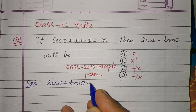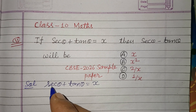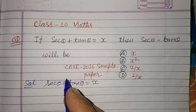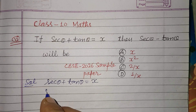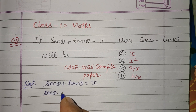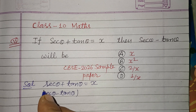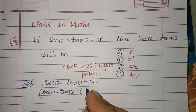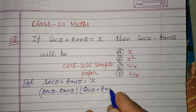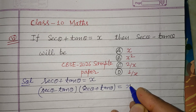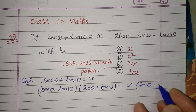We multiply both sides with the conjugate of sec θ + tan θ, which is sec θ - tan θ. So multiplying both sides with the conjugate gives us X times (sec θ - tan θ).